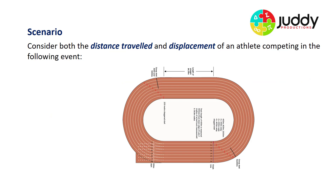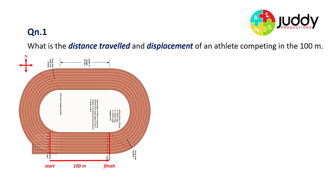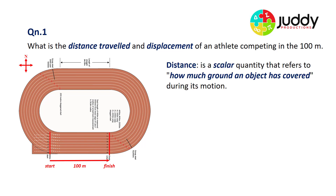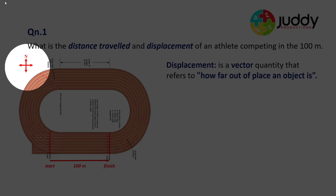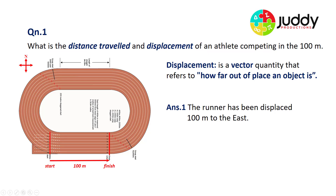Let's look at a couple of scenarios to calculate the distance travelled and the displacement, looking at an athlete competing in the 100 metre sprint, 200 metre race, and 400 metre race. The 100 metre sprint starts on the straight section of the track and finishes 100 metres in the easterly direction. The runner has covered a total distance of 100 metres. In terms of displacement — how far out of place an object is, comparing its finish from its starting position — as the crow flies, that's 100 metres towards the east. With north straight up, east is to the right, and the runner has been displaced 100 metres to the east.